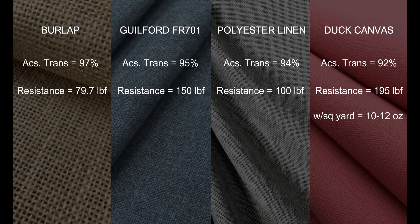The second factor to consider is durability — how well the fabric can resist wear and tear over years of use. 12 ounce duck canvas has the most resistance, with a breaking strength of 195 pound force. Guilford of Maine has a 150 pound force. Polyester linen has about 100 pound force, and burlap has the least resistance at 79.7 pound force.